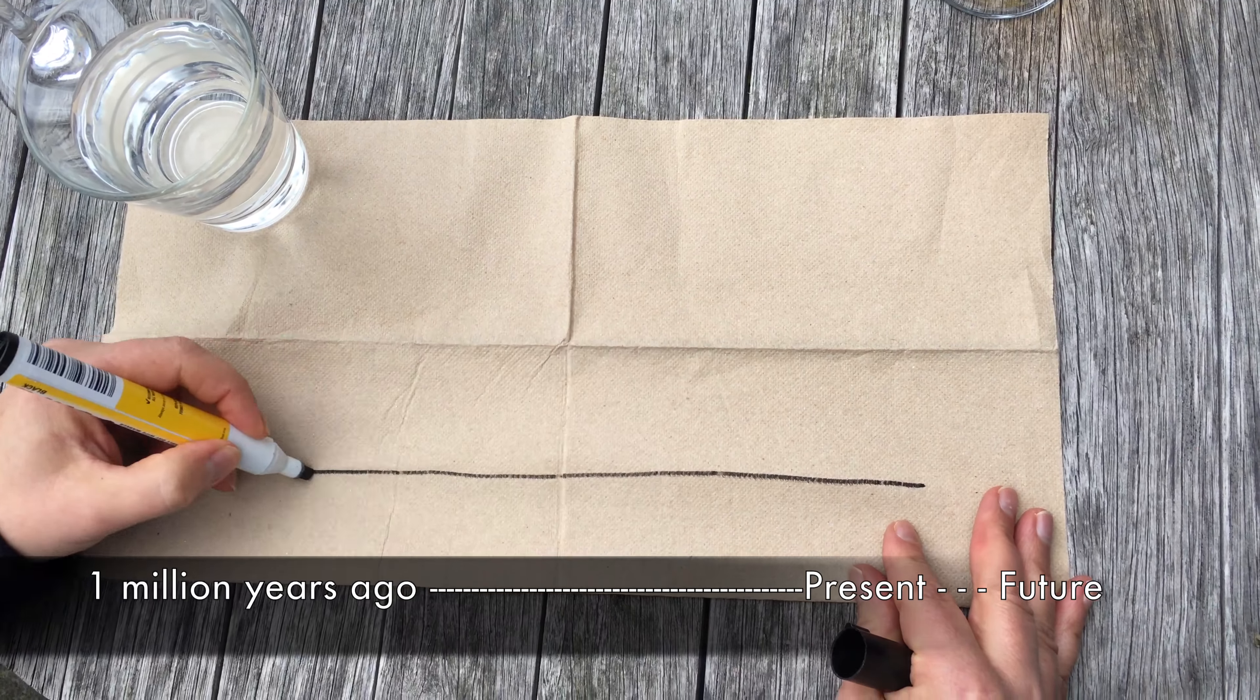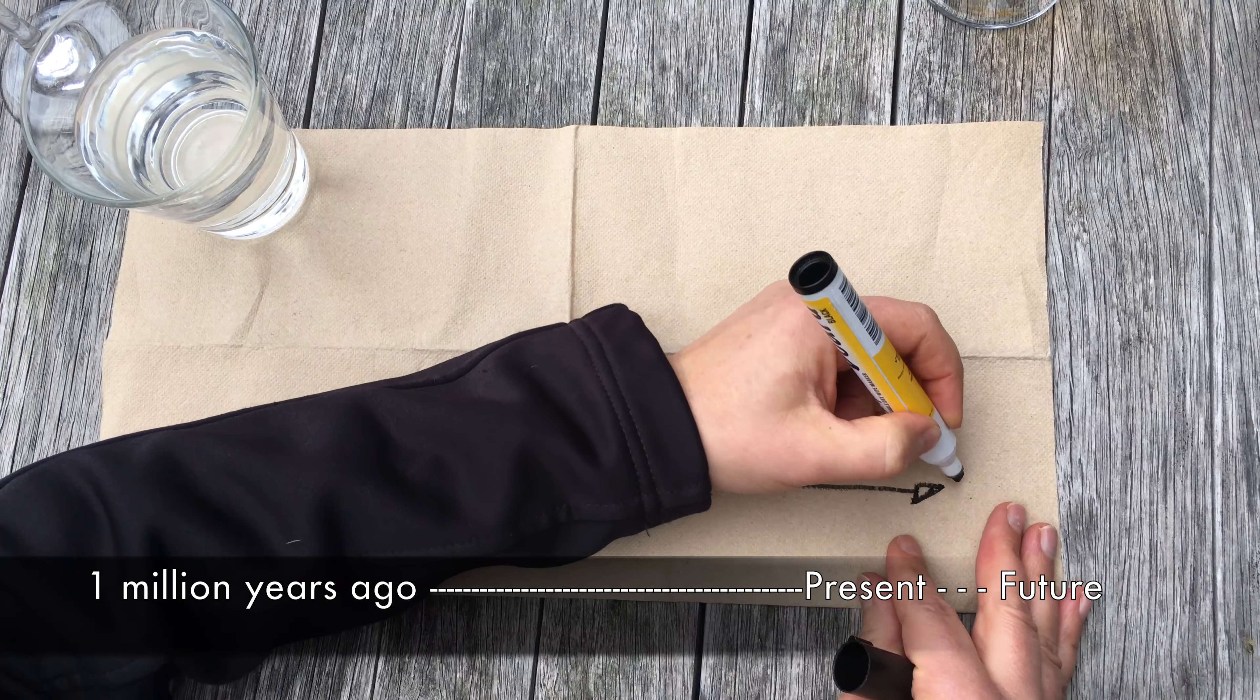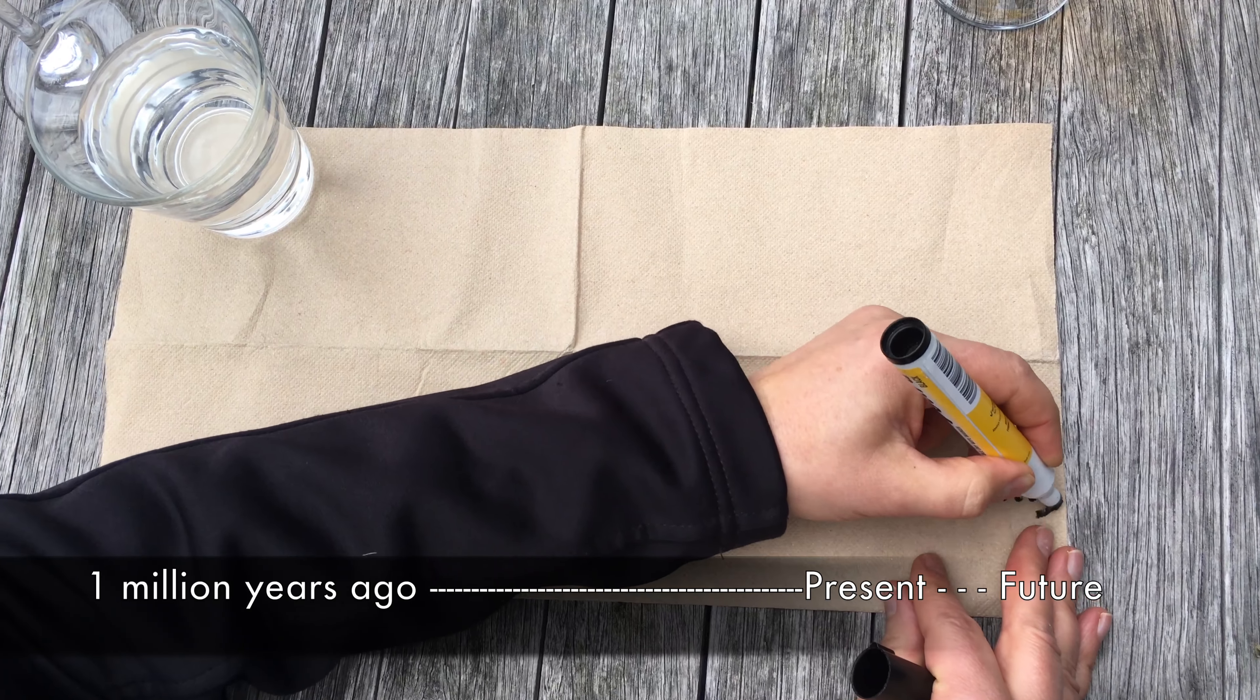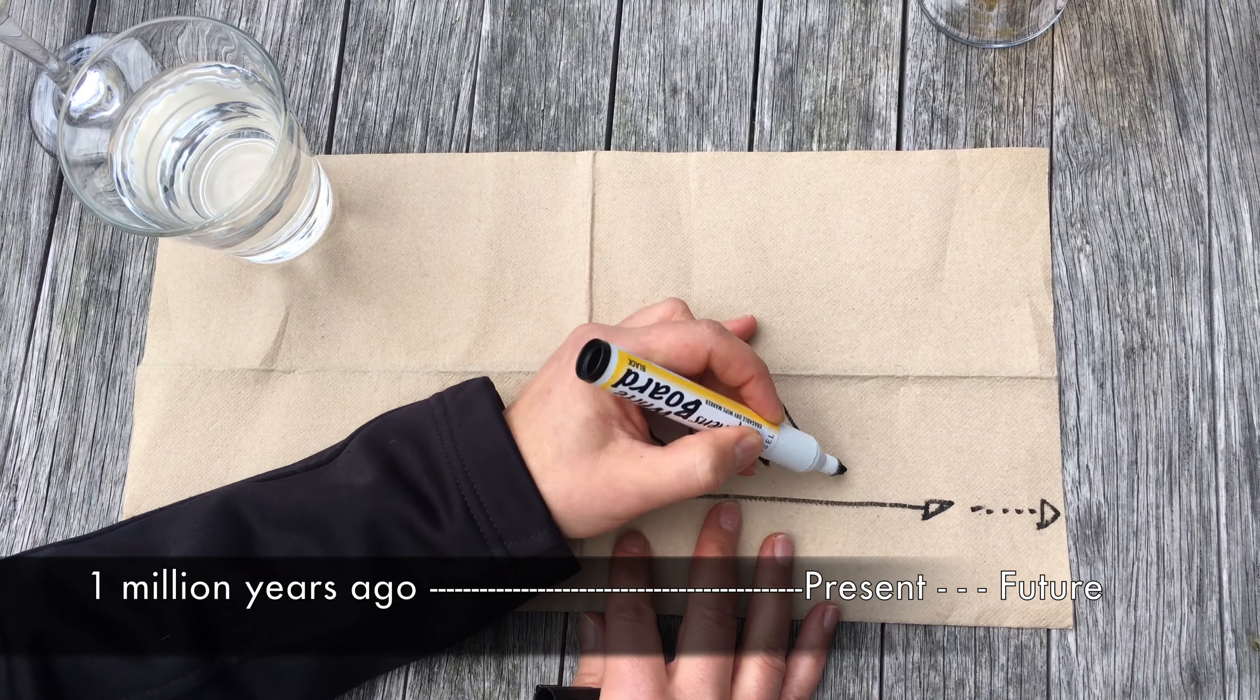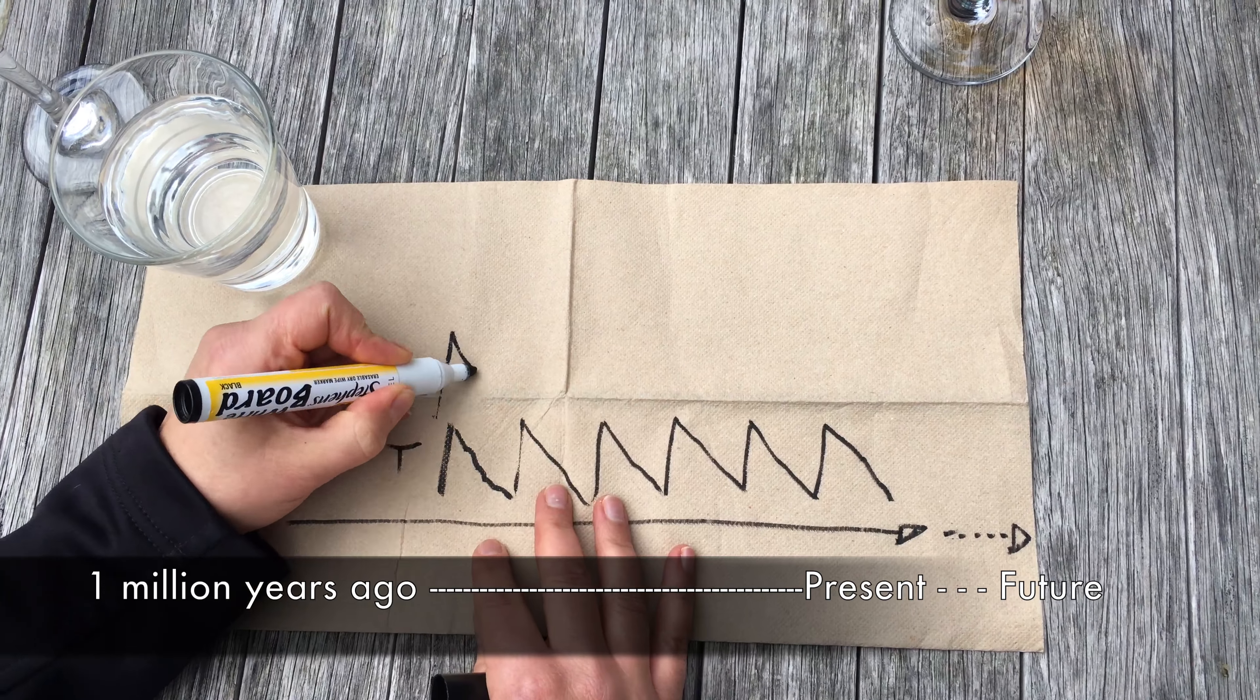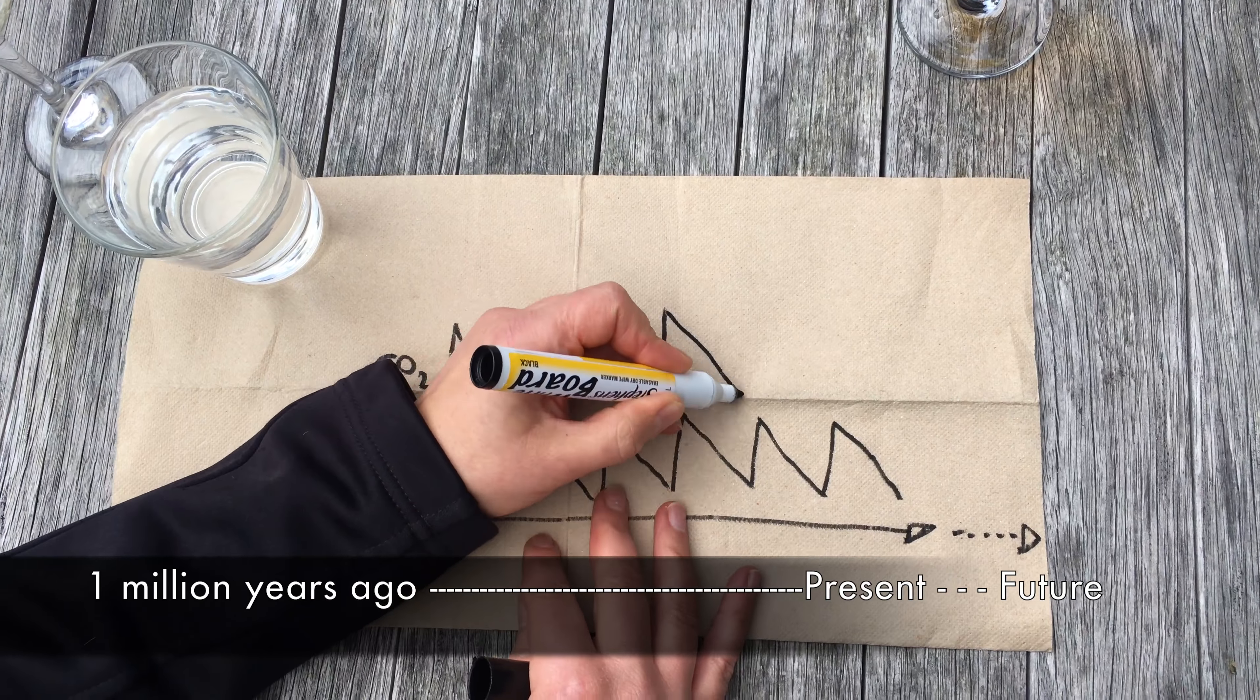So this is a timeline here, and this is today, and this is going into the future. This is temperature, and what we found for CO2 was that for all intents and purposes they looked very, very similar.